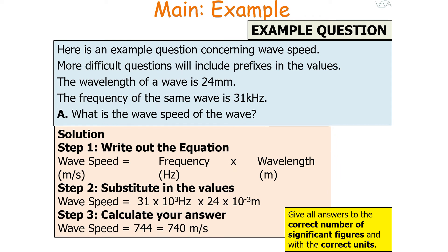More difficult questions will include prefixes in the values. The wavelength of a wave is 24 millimeters and the frequency is 31 kilohertz — what is the speed of the wave? You write out your equation, then substitute after converting the prefixes: 31 times 10 to the 3 times by 24 times 10 to the minus 3, which equals 744, or 740 to the correct number of significant figures, meters per second.